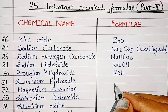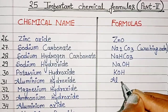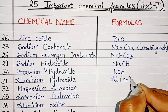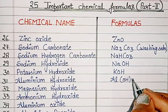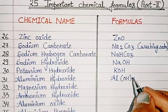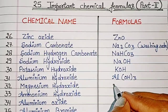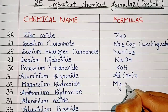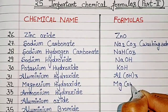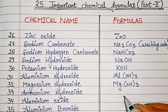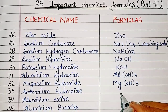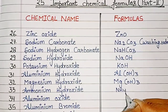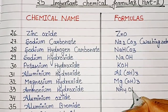Aluminium Hydroxide: Al(OH)3. Magnesium Hydroxide: Mg(OH)3. Ammonium Hydroxide: NH4OH.